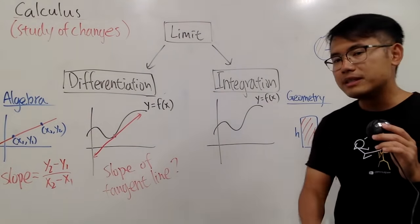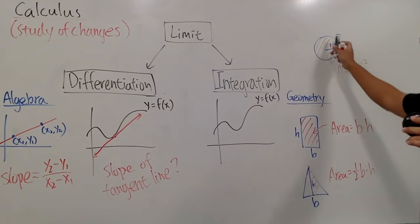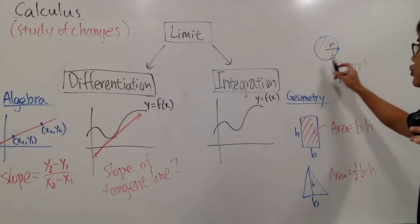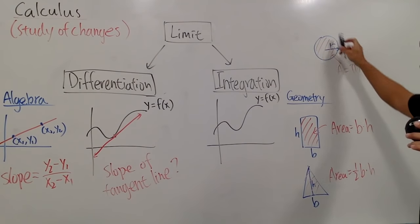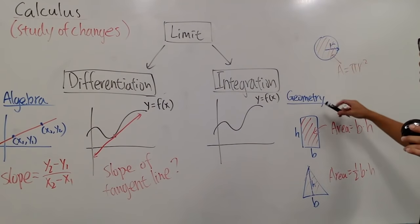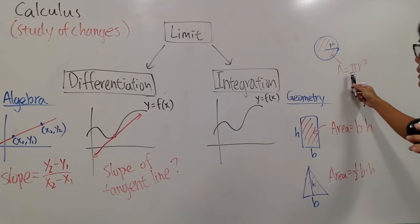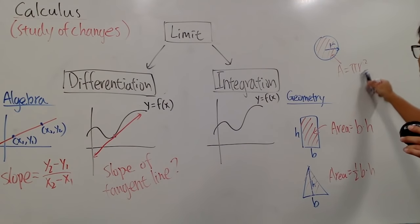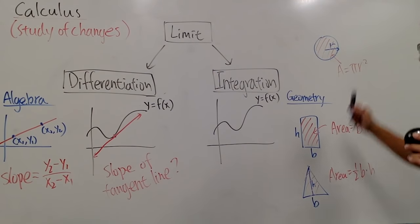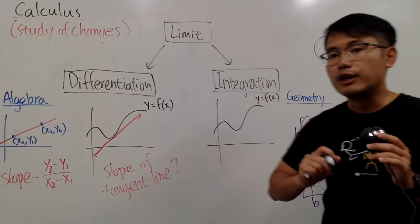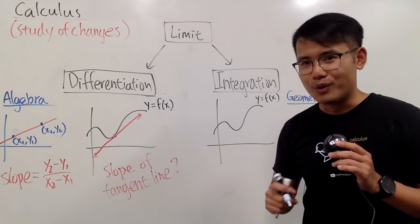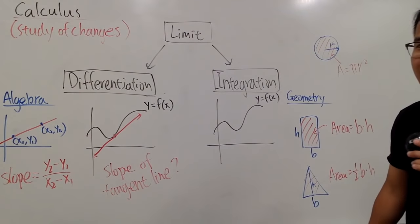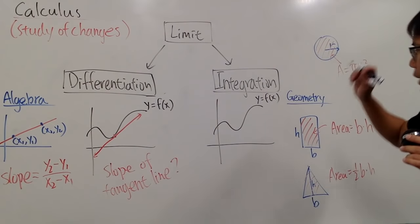But the moment you have a curve — like a circle — it's not so easy to argue that the area equals pi times r squared, where pi is approximately 3.14159...